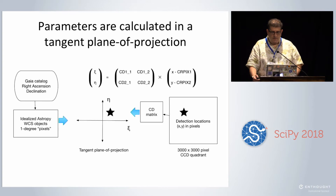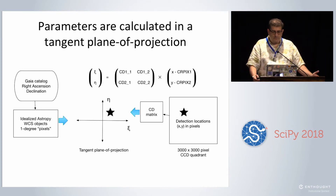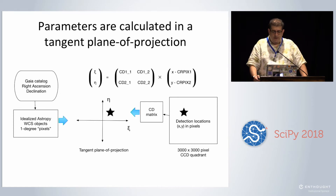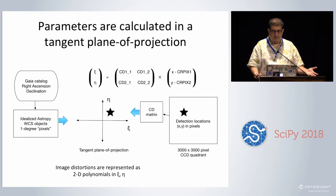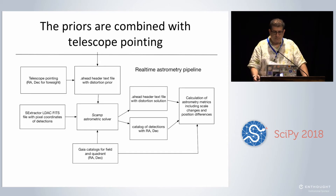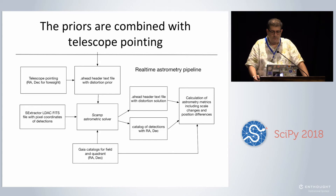We do this calculation in a tangent plane of projection. We take the Gaia catalog, transform things back into the Xi-Eta tangent plane of projection in degrees on the left-hand side. On the right-hand side, we take our detections from S-Extractor, which are X and Y in pixels, and transform them to fit the equation at the top — really just a linear matrix and some pixel offsets. In real life there are distortions, which are 2D polynomials in this tangent plane, and that's what the SCAMP solver handles. Those are represented in the metadata of the images. We combine those priors with the telescope pointing to make a header file with a distortion prior for SCAMP. AstroPy handles those kind of header files very conveniently.